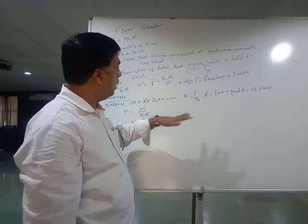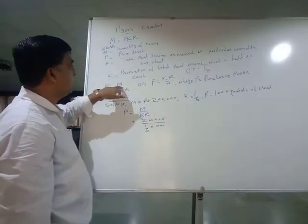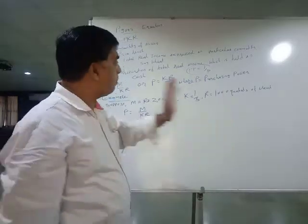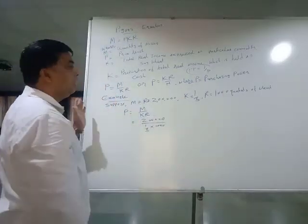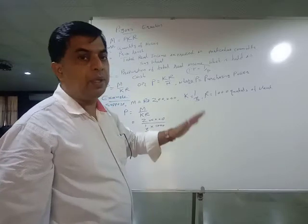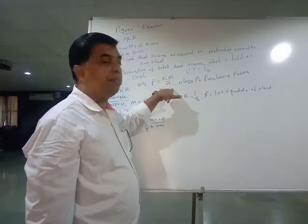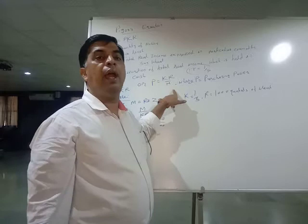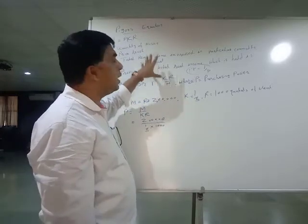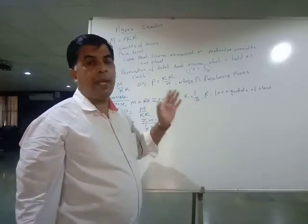There is a positive, direct relationship between supply of money and price level — as supply of money increases, price level increases. But as price level increases, purchasing power falls. So there is an inverse relationship between supply of money and purchasing power. This is the equation given by Professor Pigou, who laid adequate emphasis on both demand for money and supply of money.